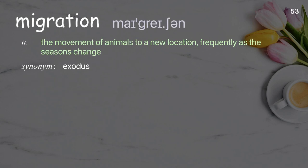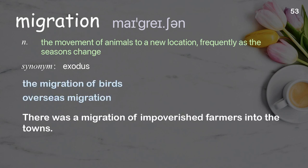Migration: The movement of animals to a new location, frequently as the seasons change. Examples: The migration of birds, overseas migration. There was a migration of impoverished farmers into the towns.